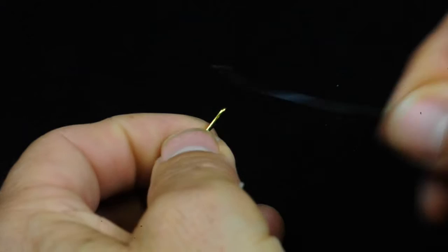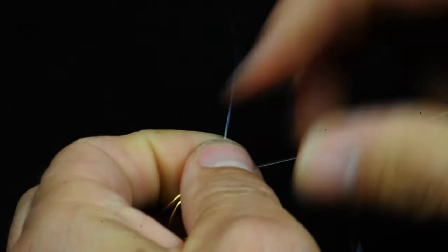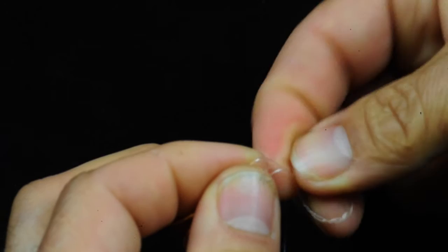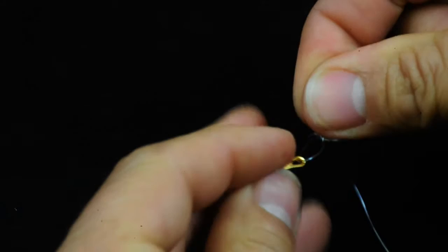And on a regular tube hook with leader material, it looks like this. Through the eye. Do the six turns. Two, three, four, five, six. Go through the loop closest to the hook. And back again.